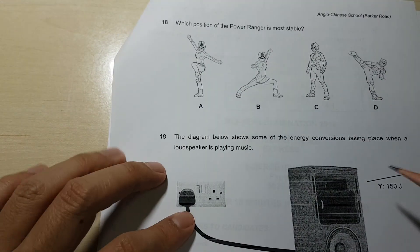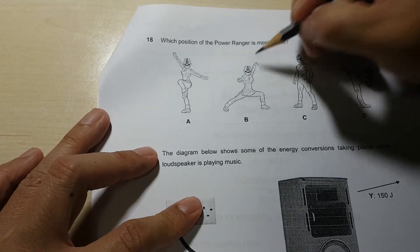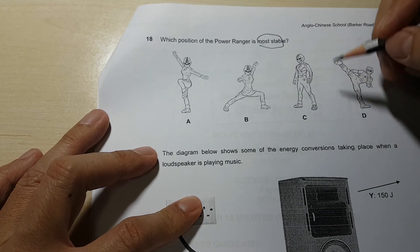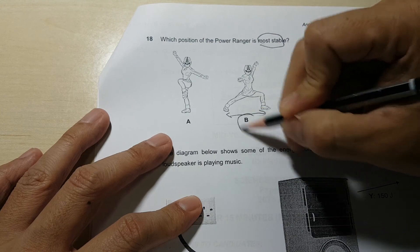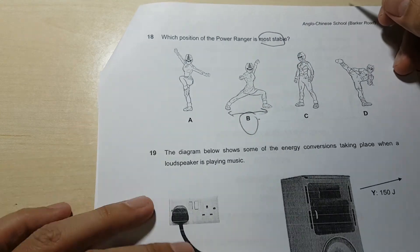Question 18. Most stable, that means lowest center of gravity and largest base area.